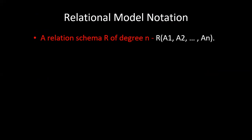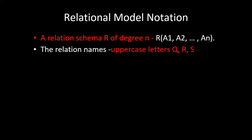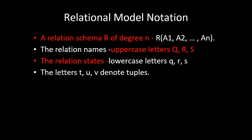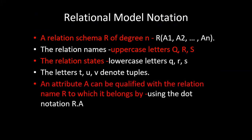Now I will revise different notations used for the relational model. The schema is represented as R(A1, A2, A3, ..., An) where R indicates the name of the relation and A1, A2, A3 are the list of attributes. Always give relation names using uppercase letters and relation state using lowercase letters.